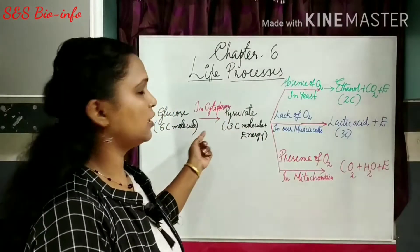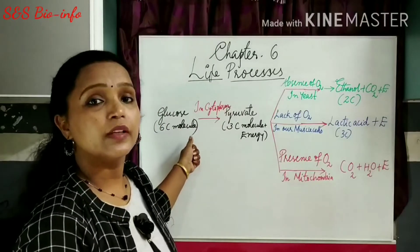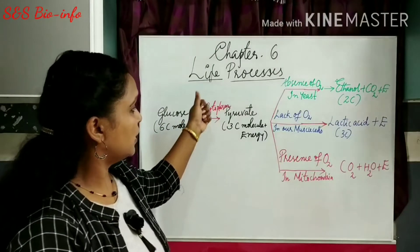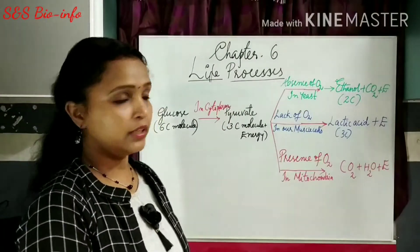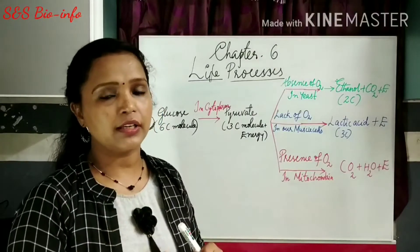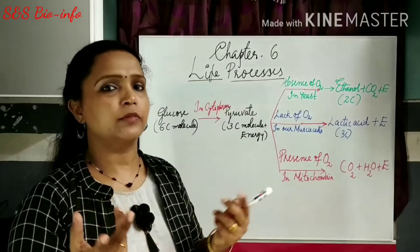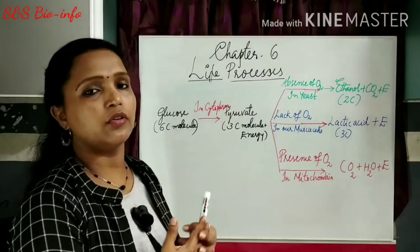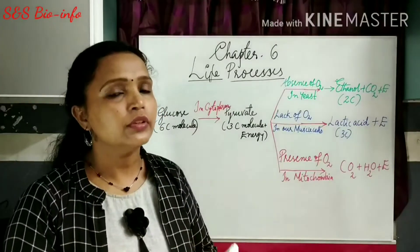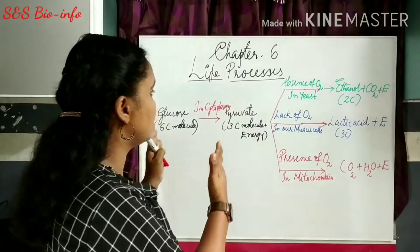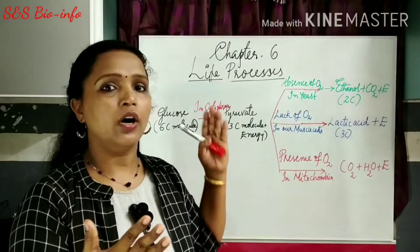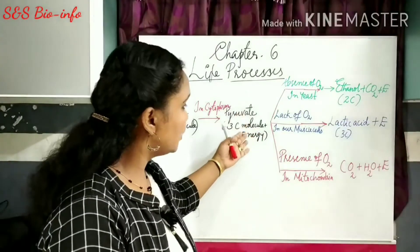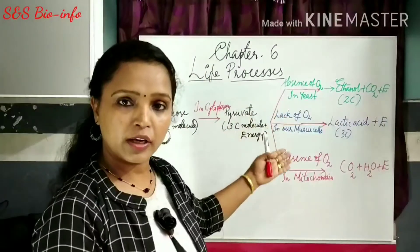Look at this schematic diagram drawn on the board. Glucose is a six-carbon molecule — it is an energy-giving nutrient in all living organisms. The six-carbon compound glucose is converted into the three-carbon compound named pyruvate in the cytoplasm of both prokaryotic and eukaryotic cells. Prokaryotes have no well-defined nuclear membrane and cell organelles, so the breakdown of glucose takes place in the cytosol itself. In eukaryotes, the breakdown of glucose to pyruvate takes place in the cytoplasm, and the rest of the oxidation of glucose takes place in the mitochondria.